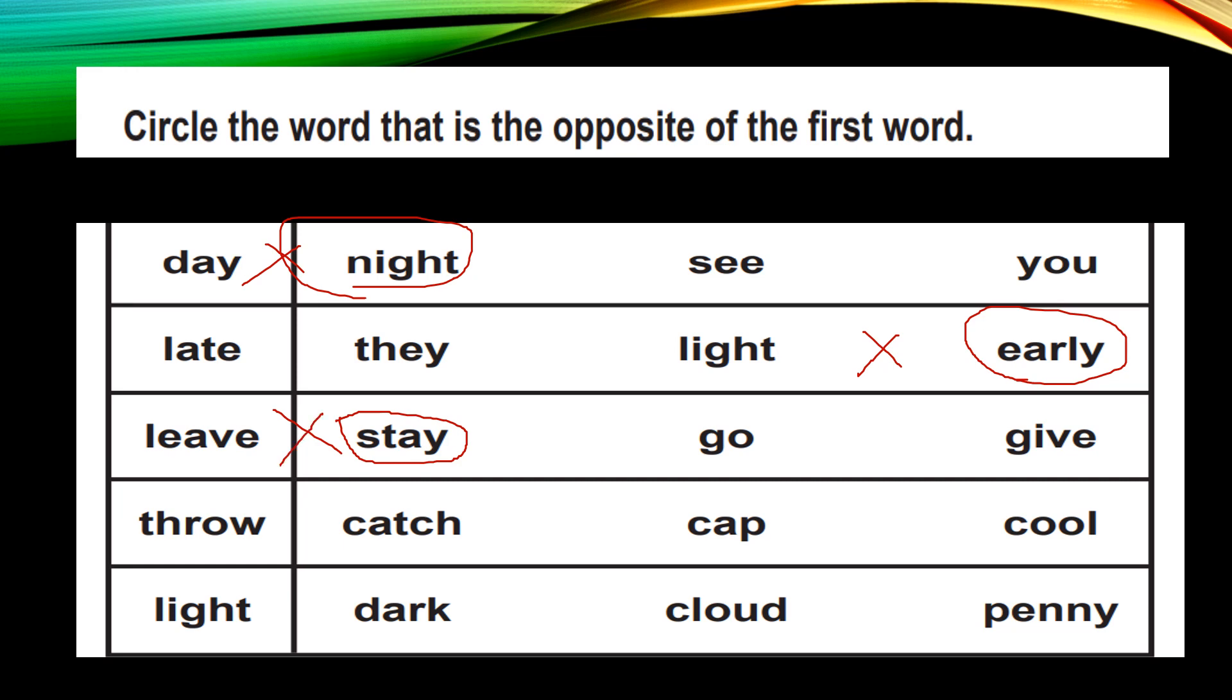Now see here again, throw. Throw opposite is catch. When you hit a ball from a bat, someone will catch right? So throw, you hit a ball, that means you throw a ball, or you give a ball to someone else, like you are playing a game. You are hitting a ball or you are giving a ball to someone, so someone will dare to catch right. So throw opposite is catch.